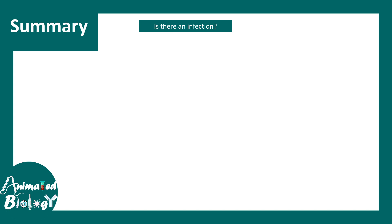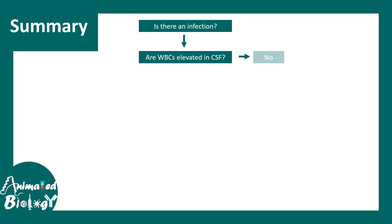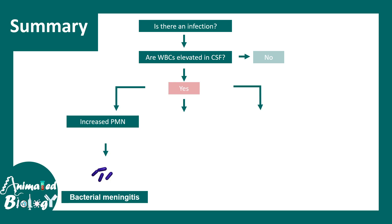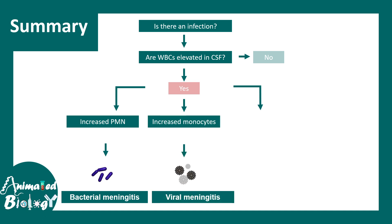So how does a clinician proceed with this data? They first ask: is there an infection? If yes, there would be more WBCs and elevated protein in the CSF regardless of meningitis type. If both answers are yes, the clinician then checks what type of WBC is elevated — is it PMN (neutrophils) or monocytes? If it is PMN/neutrophils, it is most likely bacterial or pyogenic meningitis. If mostly monocytes, it is likely viral meningitis.